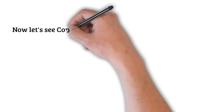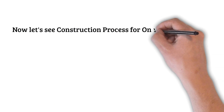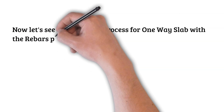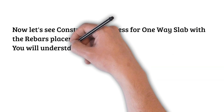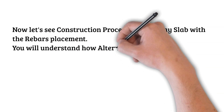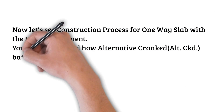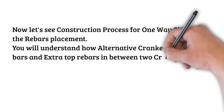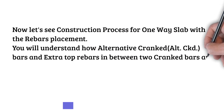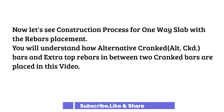Now let's see the construction process for a one-way slab with rebar placement. You will understand how alternative cranked rebars and extra top rebars in between two cranked bars are placed in this video.